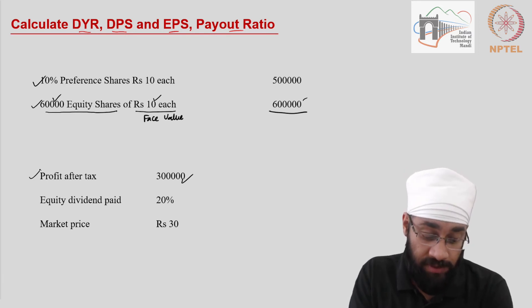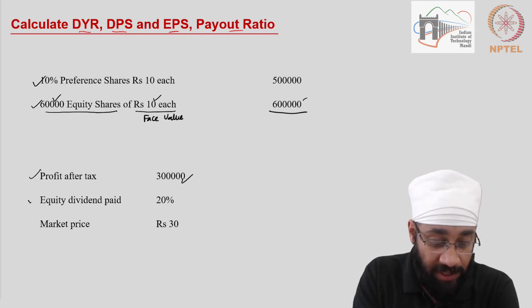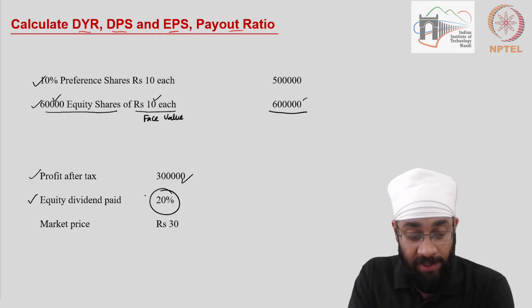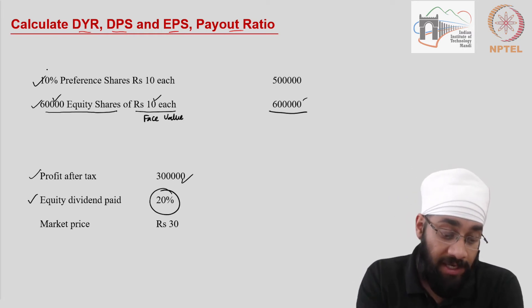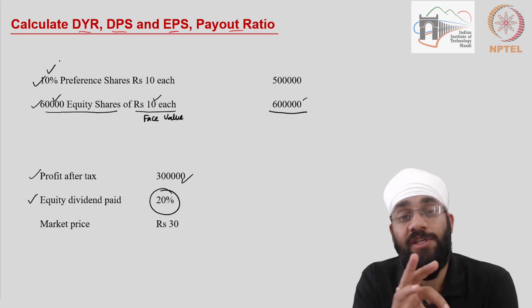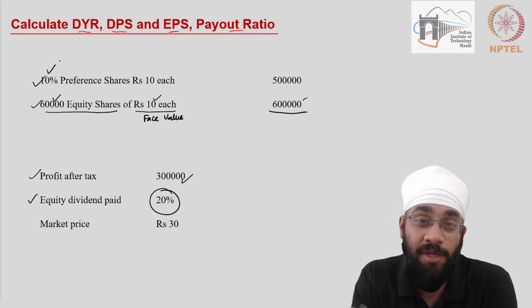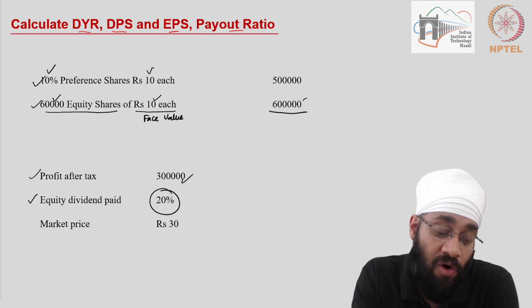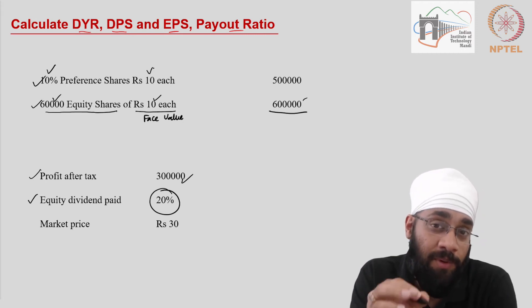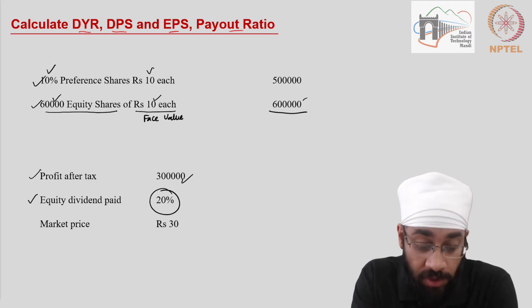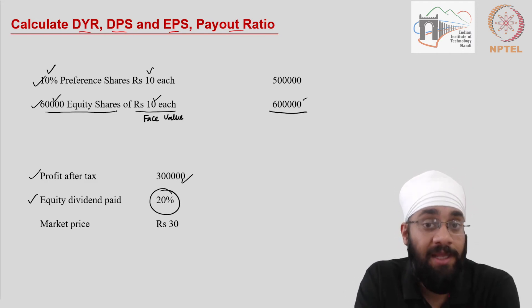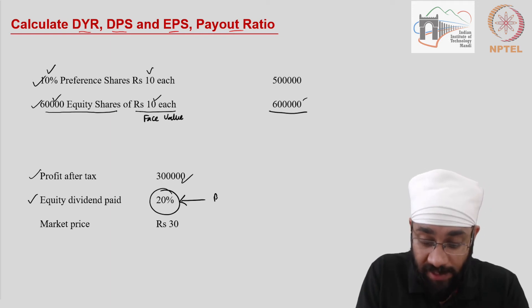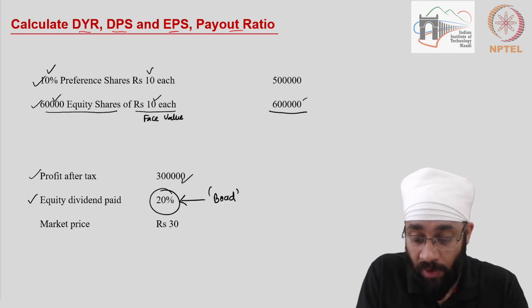Then we have profit after tax, which we already know. The equity dividend paid is 20%. The 10% preference dividend is fixed — it doesn't matter what profit is made; 10% of the face value of preference shares must be paid to preference shareholders.